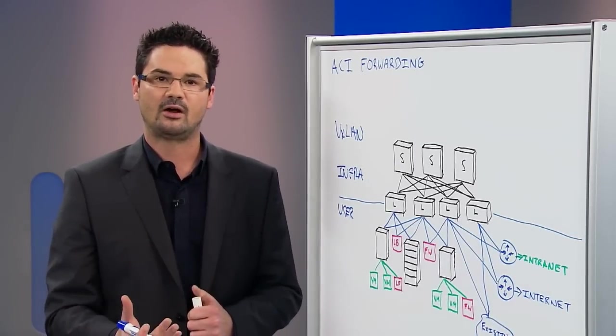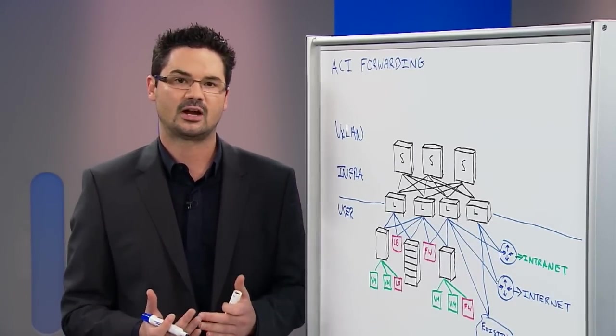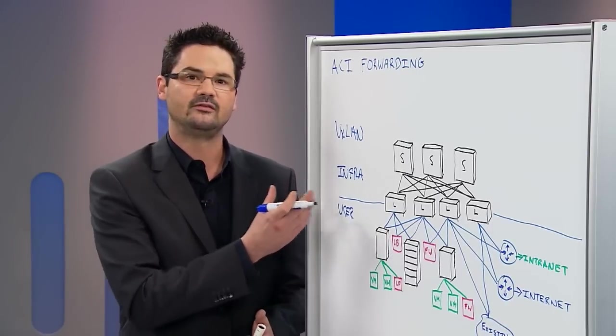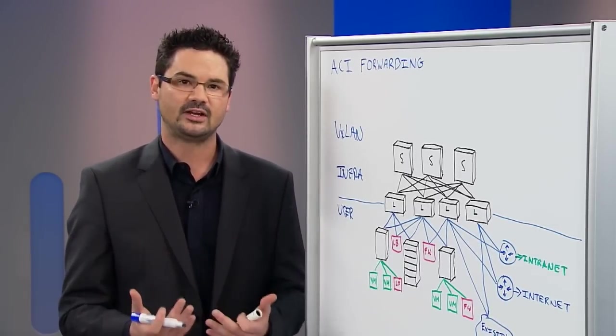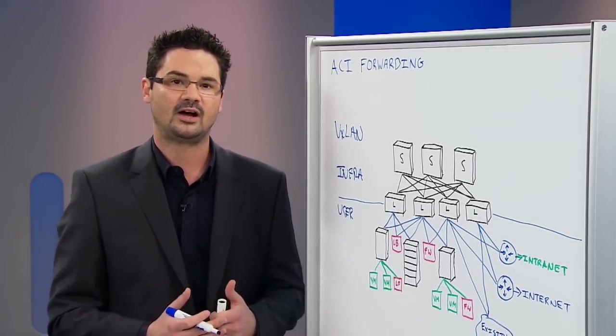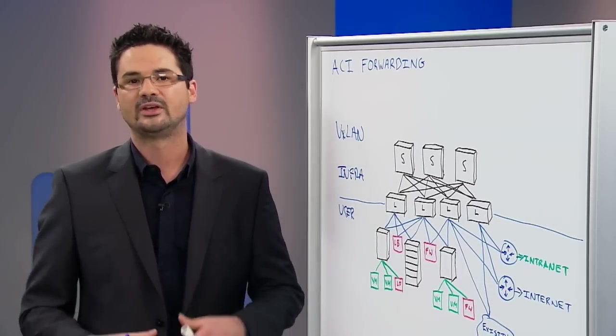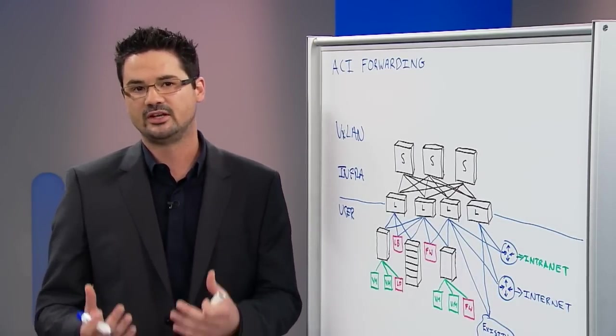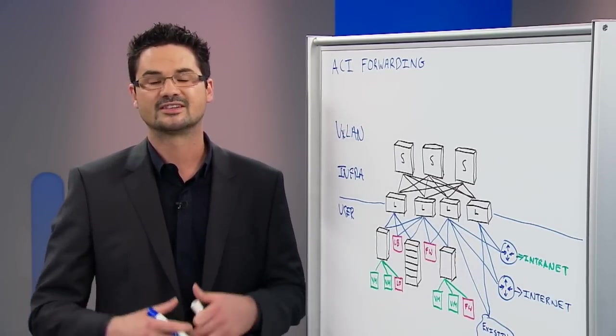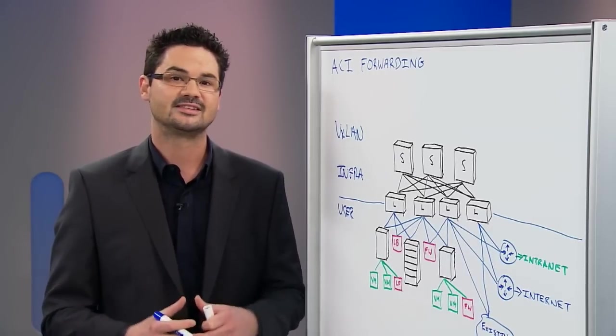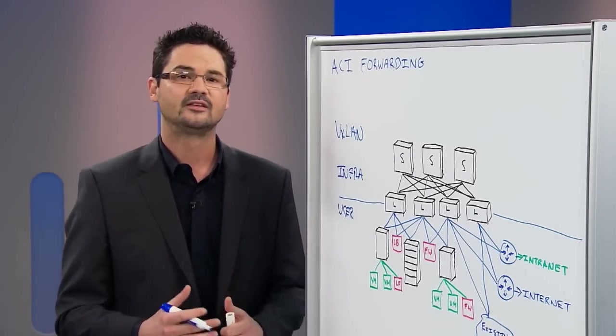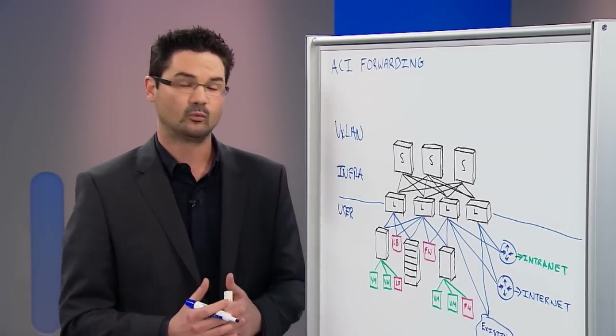So we do this using layer 3 routing, and then we can encapsulate that traffic from that user space into VXLAN, and then use that VXLAN overlay to be able to provide layer 2 adjacency when we need to. So we can emulate that layer 2 adjacency you would get out of a VLAN, while giving you the extensibility of VXLAN, the scalability of VXLAN, and several other advantages.